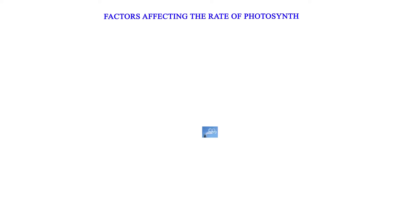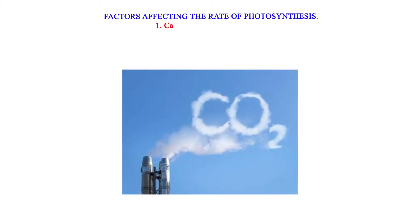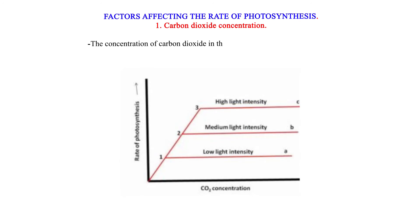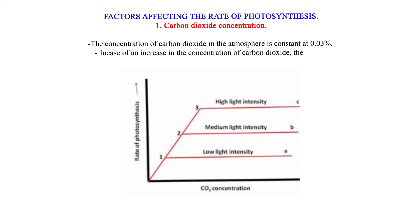Factors affecting the rate of photosynthesis. 1. Carbon dioxide concentration: The concentration of carbon dioxide in the atmosphere is constant at 0.03%. In case of an increase in the concentration of carbon dioxide, the rate of photosynthesis increases up to a certain point where it becomes constant.